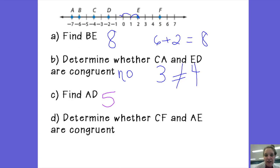And then the last one, determine whether or not CF and AE are congruent. CF, I'm going from negative 4 to positive 5. So the length of CF is 9. 4 plus 5 is 9. And the length of AE, I'm going from negative 7 to positive 2. 7 plus 2 is also 9. There's 9 spaces in between A and E.